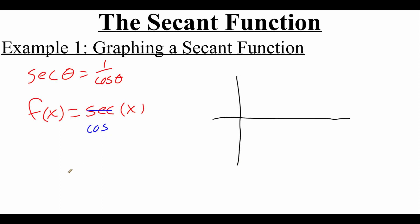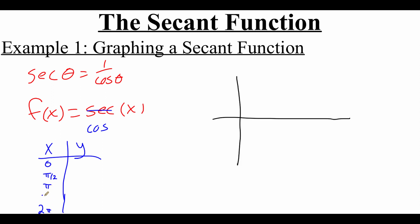When graphing cosine, we make an x and y chart. This one has no phase shift so we start at zero. The b value is 1, meaning the period is 2π, so we end at 2π. Halfway between 0 and 2π is π. Halfway between 0 and π is π/2, and halfway between π and 2π is 3π/2.